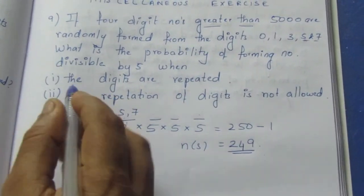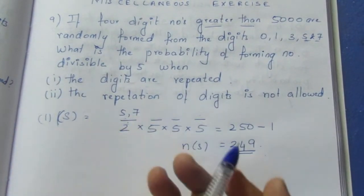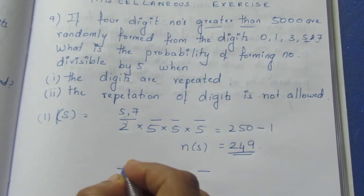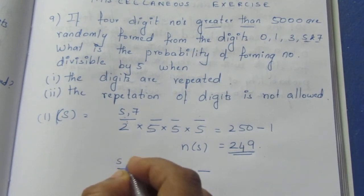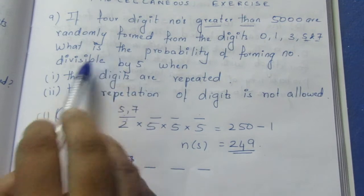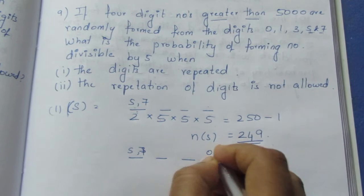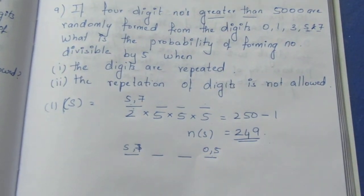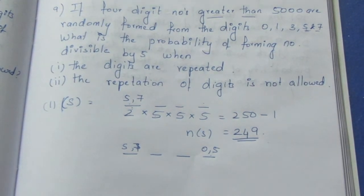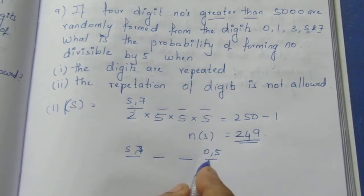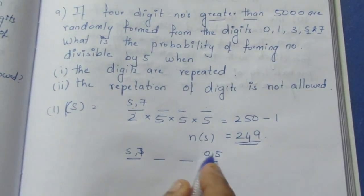Now the question asks for numbers divisible by 5 when digits are repeated. For a number to be divisible by 5, the unit digit must be 0 or 5. So the last digit can be filled in 2 ways — either 0 or 5.